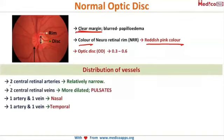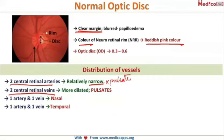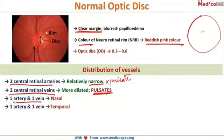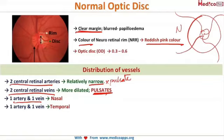The distribution of vessels passing through the cup is important. There are two central retinal arteries and two central retinal veins. The artery is relatively narrow and does not pulsate, unlike systemic arteries. The vein pulsates. After passing through the cup, one artery and one vein proceed nasally and another artery and vein go temporally.